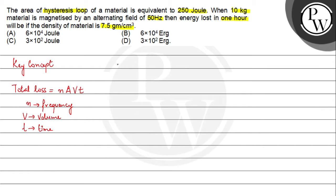Now, in the question, we have area of the hysteresis loop in terms of energy, that is 250 joules. Secondly, we have frequency as 50 hertz, and we have the density of the material that is 7.5 gram per centimeter cube, which we can write as 7500 kg per meter cube. We are also given the mass, which is m equals 10 kg.